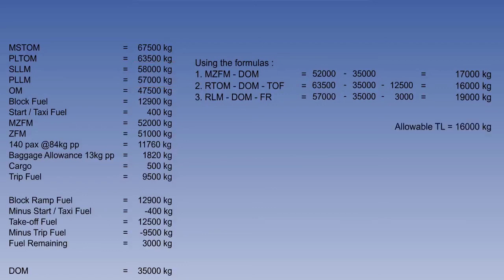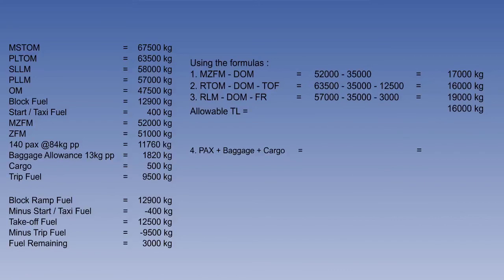Looking at the three maximum allowable traffic load calculations, we can see that the lowest mass of 16,000 kilograms is the limiting allowable load. We can now extract from the table the data which will make up the actual traffic load. The actual traffic load is the sum of the passenger load mass of 11,760 kilograms, the baggage of 1,820 kilograms, and the cargo of 500 kilograms, giving a total mass of 14,080 kilograms.